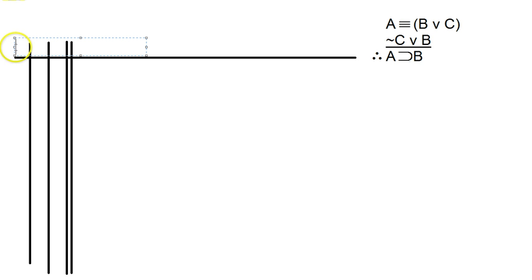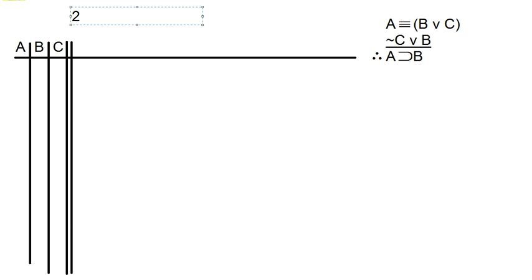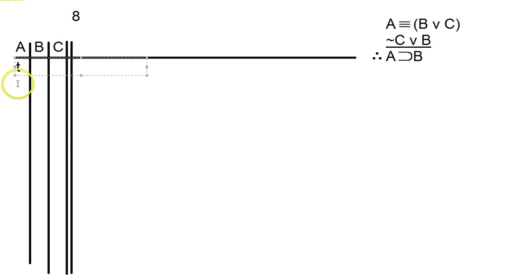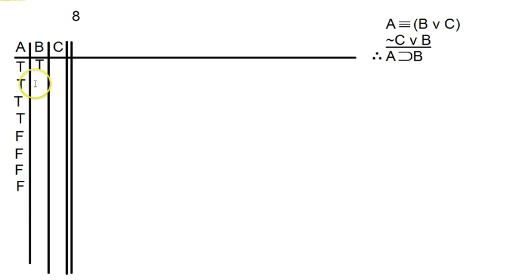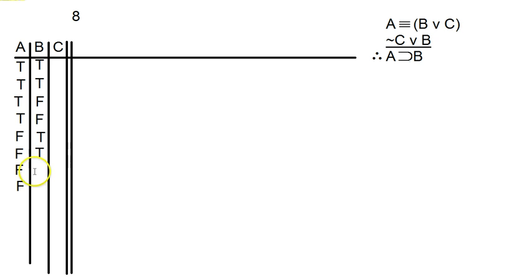With three different letters — A, B, and C — we're looking at 2 to the nth power where n is 3, so that's 2 times 2 times 2, which is eight. We've got eight possibilities to deal with. We'll do the same thing as with two letters and four possibilities: make half of them true in the first column, half false. So with eight possibilities, I'm looking at four trues and then four falses. Then the next column: cut that in half, so two trues, two falses, two trues, two falses.